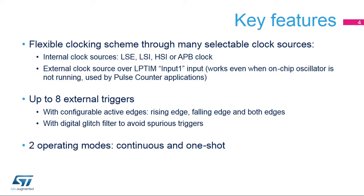The low-power timer has a very flexible clocking scheme. It can be clocked from on-chip clock sources — LSE, LSI, HSI, or APB clock. Or it can be clocked from an external clock source over the low-power timer's input-1 input. This latter feature is used for building pulse counter applications and is a key function for metering applications like gas meters.